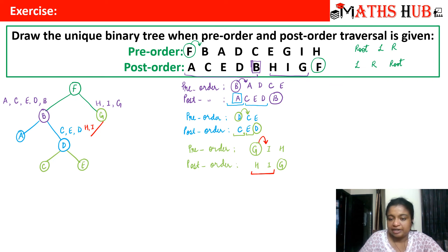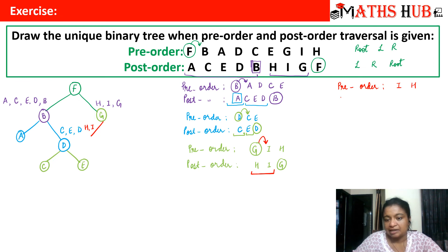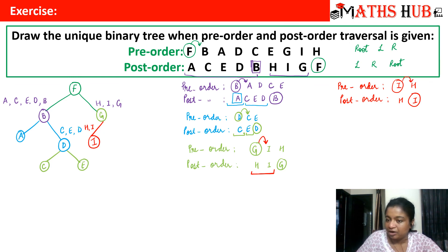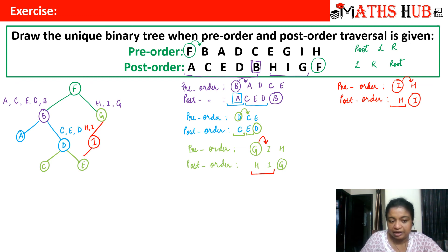We are now left with two vertices. The pre-order for these two is I, H and the post-order is H, I. So I is the next root. The immediate successor of I in the pre-order is H. All vertices up to and including H are in the left subtree, and there is nothing after H, so there is no right subtree. H becomes the left child of I. This completes the binary tree.